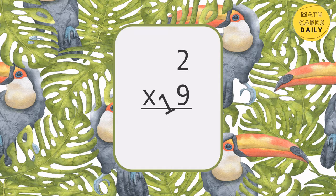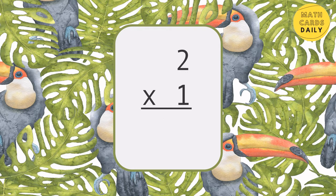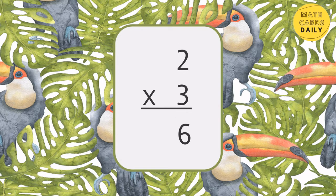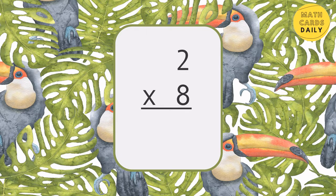2 x 9 is equal to 18. 2 x 1 is equal to 2. 2 x 3 is equal to 6. 2 x 7 equals 14. 2 x 8 is equal to 16.